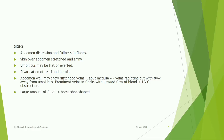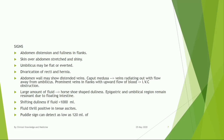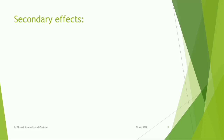With a large amount of fluid, there is horseshoe-shaped dullness. The epigastric and umbilical regions remain resonant due to floating intestine. Shifting dullness is present if fluid is more than 1000 ml. Fluid thrill is positive in tense ascites. The puddle sign can detect as low as 120 ml of fluid.